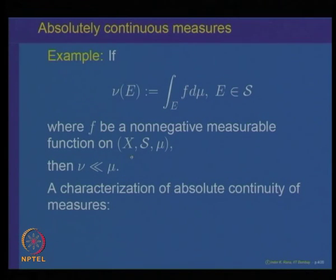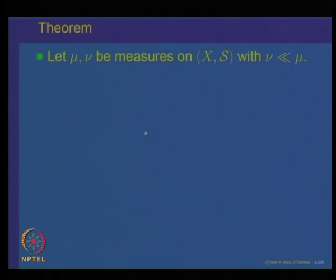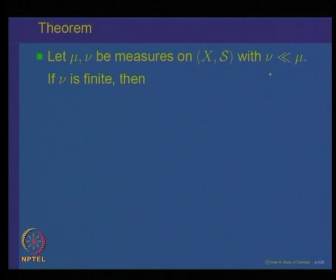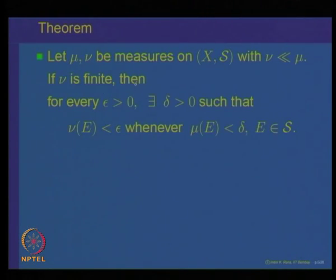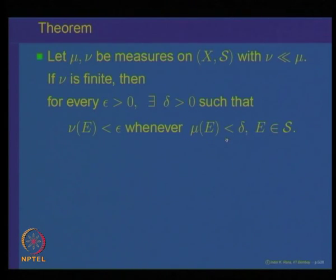Let us give a characterization of absolutely continuous measures in terms of an epsilon-delta definition, similar to absolute continuity of functions. We want to prove that if mu and nu are two measures such that nu is absolutely continuous with respect to mu and nu is finite, then for every epsilon greater than 0, one can find a delta greater than 0 such that whenever mu of E is less than delta, that implies nu of E is less than epsilon.